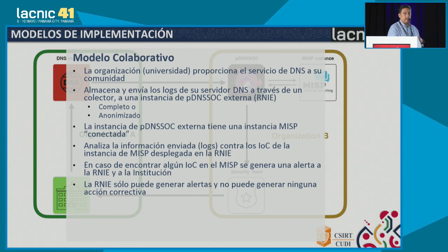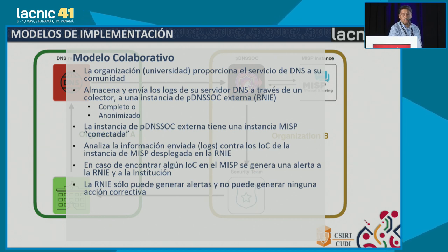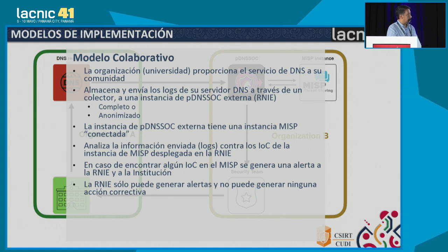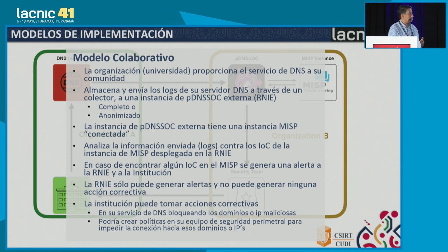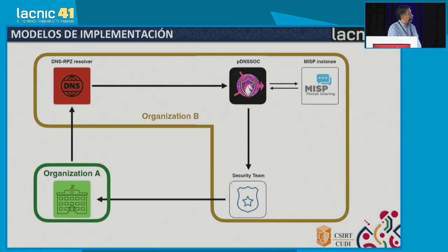If we detect something, we send an alert back to our security team and to the security team of the institution. With this model, we can only generate alerts, but we cannot take any further action because we are not in the infrastructure of the university. However, with these alerts, the institution could take corrective actions in their own DNS — they can block some of the domains or IPs and also create policies in the perimeter security devices.